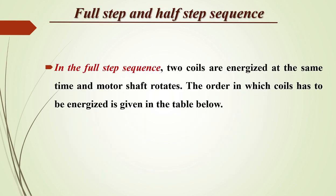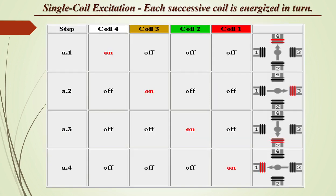There are two types of sequences: full step and half step. In the full step sequence, two coils are energized at the same time and the motor shaft rotates. For single coil excitation, also called one-phase-on or wave stepping mode, only one terminal of the motor is energized at any given time. This has fewer steps to achieve a full 360-degree rotation, and the current consumed is also very low.